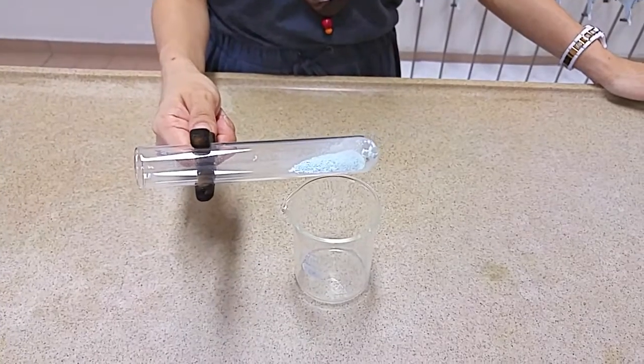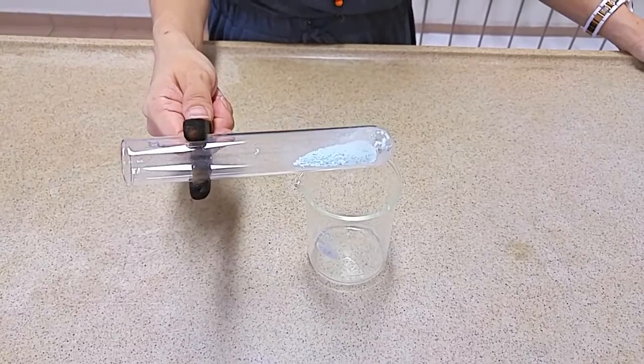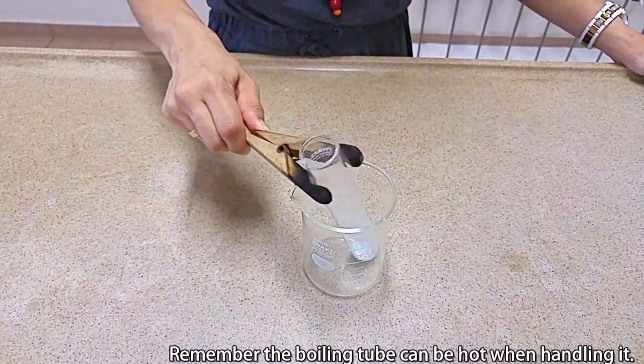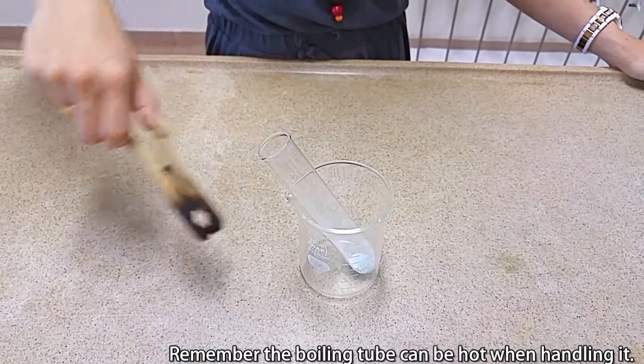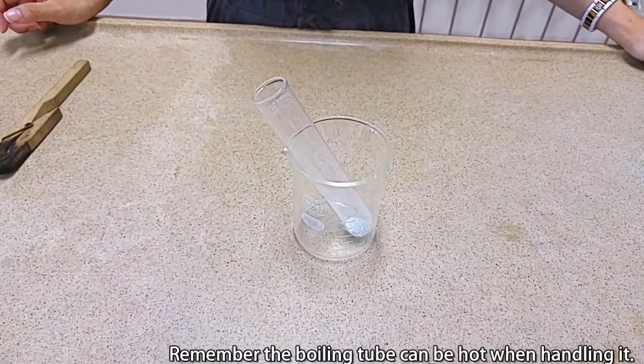So this will be the final product that you'll see at the end of the heating. This is the anhydrous copper sulfate. Put it in the beaker and let it cool. When it is cool, bring it to the weighing balance and weigh.